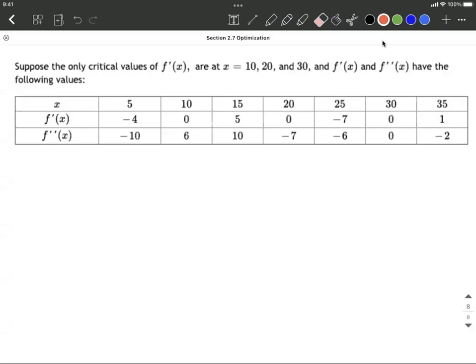Okay, we have a table of values for the first derivative and second derivative. We're told we have critical values at 10, 20, and 30, and we know that because our first derivative equals 0 at each one of those x values.